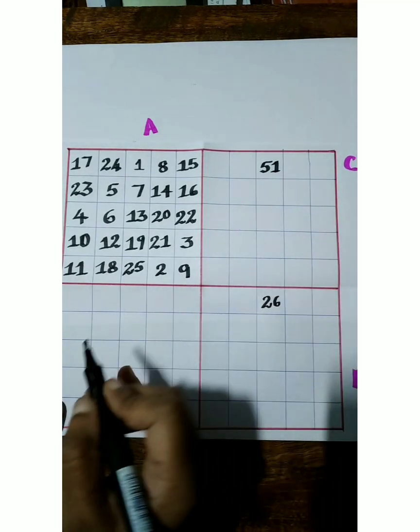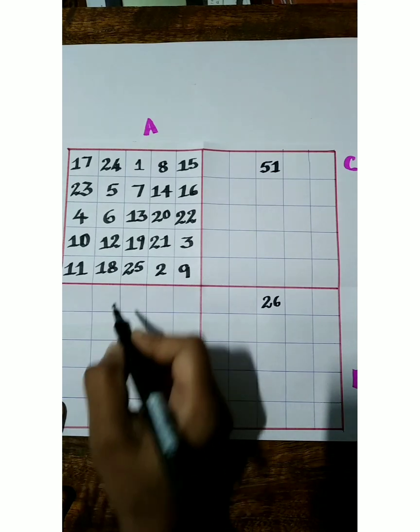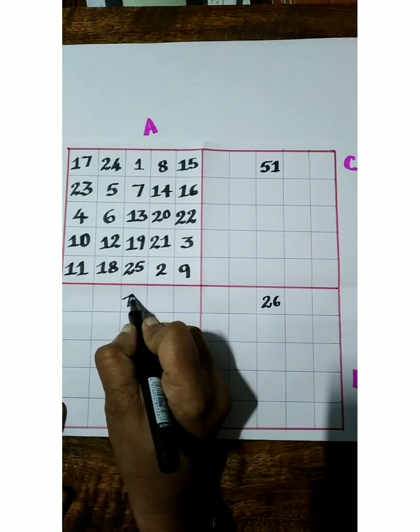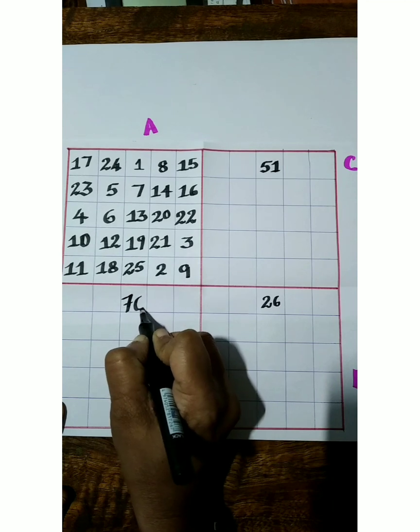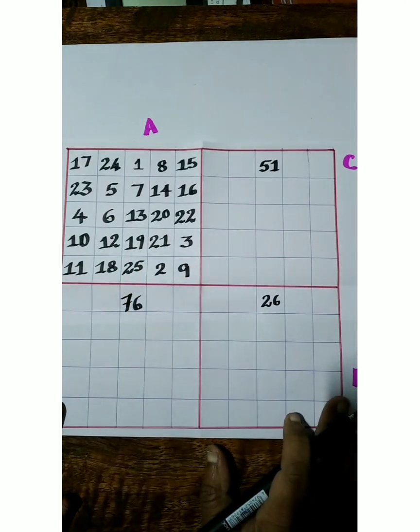Then we can move to box D and write 76 here. So similarly, we have to fill all the boxes.